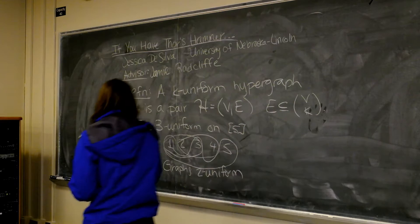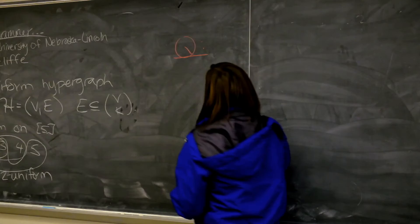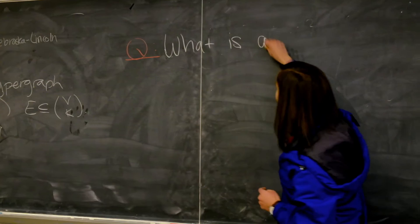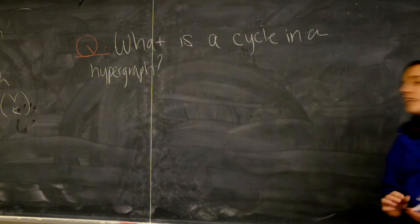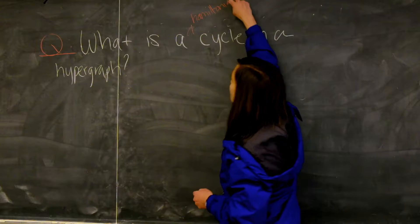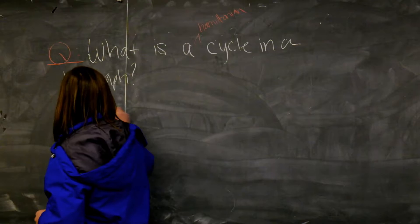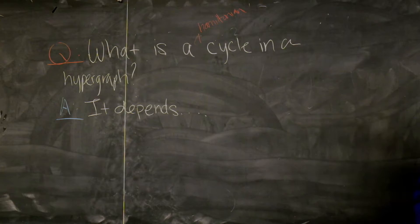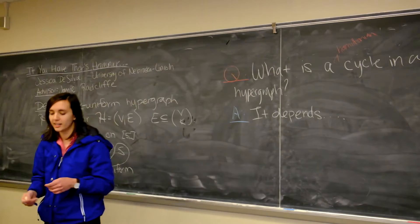One natural question to ask about hypergraphs is: what do we mean by a cycle in a hypergraph? And in particular, what is a Hamiltonian cycle? The answer is that there really isn't a good answer — it depends. You can define it in many different ways. Today we'll look at one particular type of cycle in a hypergraph, and it's sort of been the hot way to define a cycle recently, or at least within the past six years or so.